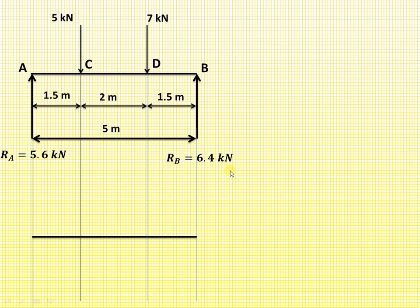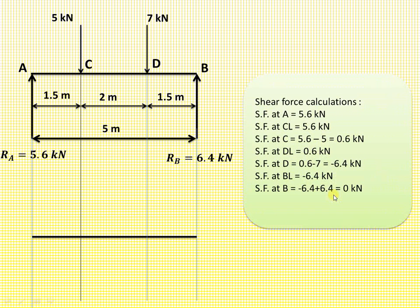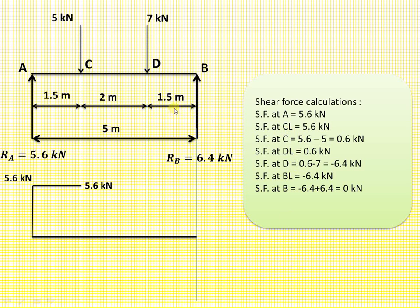The convention for the shear force diagram is that upward forces are positive and downward forces are negative. At point A there is an upward reaction of 5.6 kN, so the shear force at A is +5.6 kN. From A to just left of C there are no other forces, so the shear force remains 5.6 kN. At point C there is a downward load of 5 kN, so the shear force drops to 5.6 − 5 = 0.6 kN.